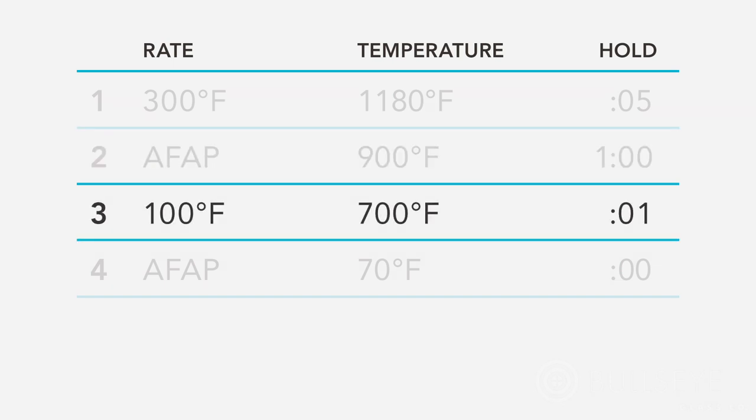The third segment is the anneal cool. Program the kiln to cool at the rate of 100 degrees per hour to 700 degrees. A hold is not required as the schedule transitions to the final segment.